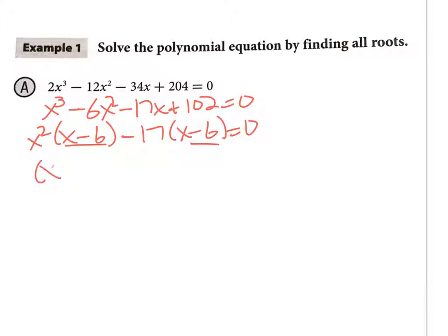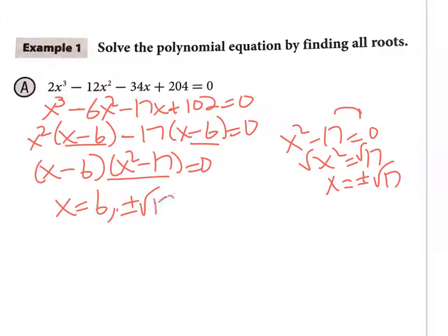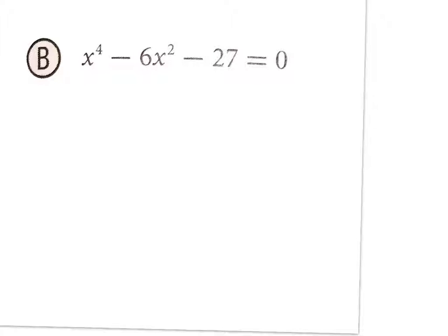Factoring out (x − 6) leaves (x − 6)(x² − 17) = 0. One zero is x = 6. For the other two, solve x² − 17 = 0: move 17 over, take the square root of both sides, and don't forget ±. Since 17 doesn't simplify, the zeros are x = 6 and x = ±√17. Whenever you see four terms, try grouping first.